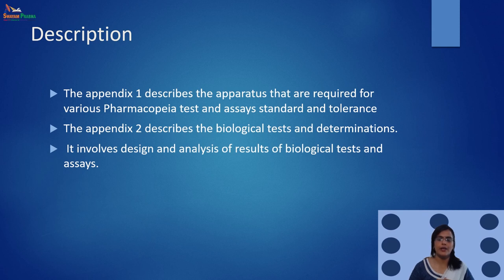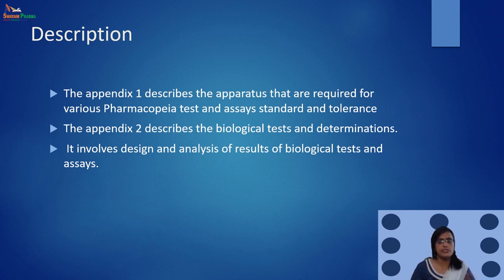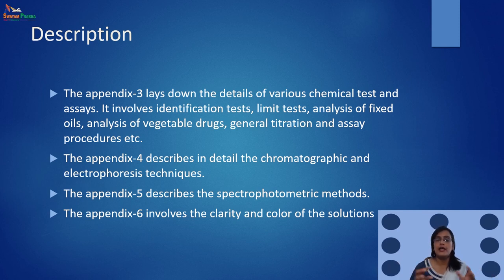Next is the list of appendices in Indian pharmacopoeia. Appendix 1 describes the apparatus required for various pharmacopoeial tests and assays, including particular standards and tolerances. Appendix 2 describes biological tests and determinations, involving design and analysis of results of biological tests and assays. Appendix 3 lays down details of various chemical tests and assays — it involves identification tests, limit tests, analysis of fixed oils, analysis of vegetable drugs, and general titration and assay procedures. Appendix 4 describes in detail chromatographic and electrophoresis techniques.